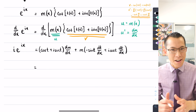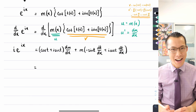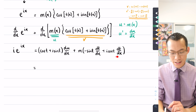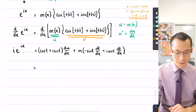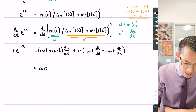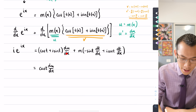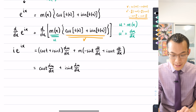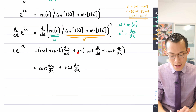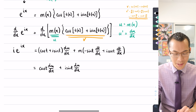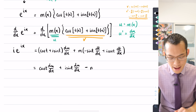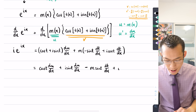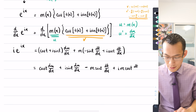To separate the real and imaginary parts on the right-hand side, I'm going to have to expand all these terms — there's an i term here and an i term here. Breaking them out of the brackets gives: cos t · dm/dx, plus i · sin t · dm/dx, then minus m · sin t · dt/dx, and plus i · m · cos t · dt/dx.